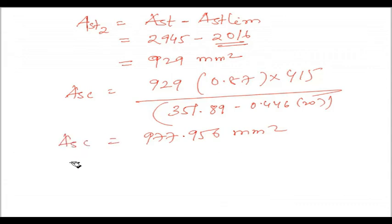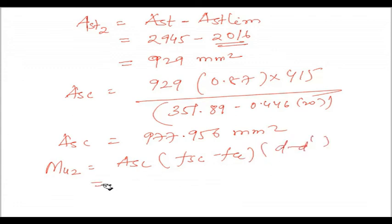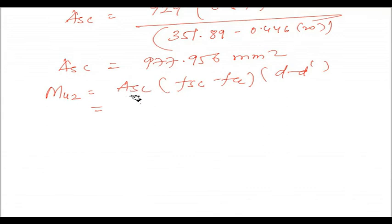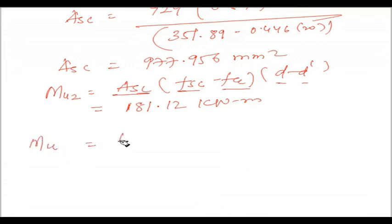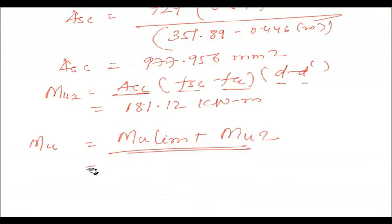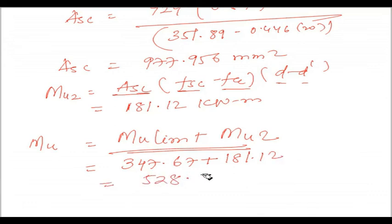Now we calculate MU2. MU2 = ASC × (FSC − FCC) × (D − D') = 181.12 kNm. The ultimate moment MU = MU_limiting + MU2 = 347.67 + 181.12 = 528.79 kNm. This is the ultimate moment of resistance.